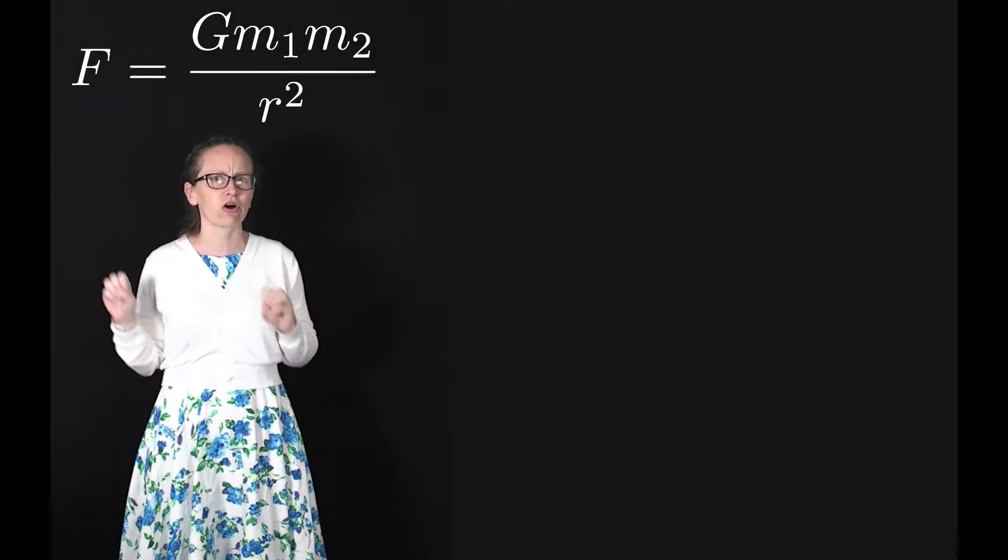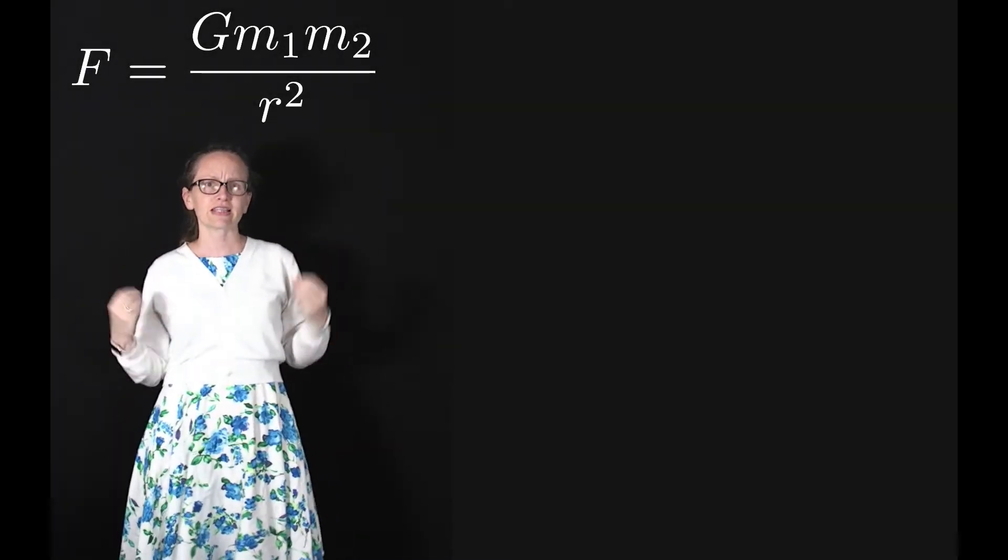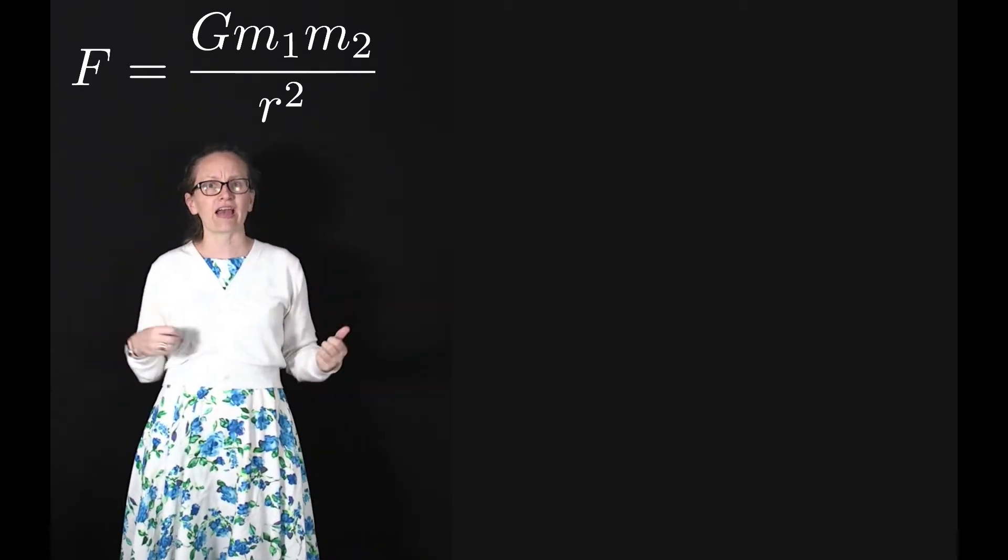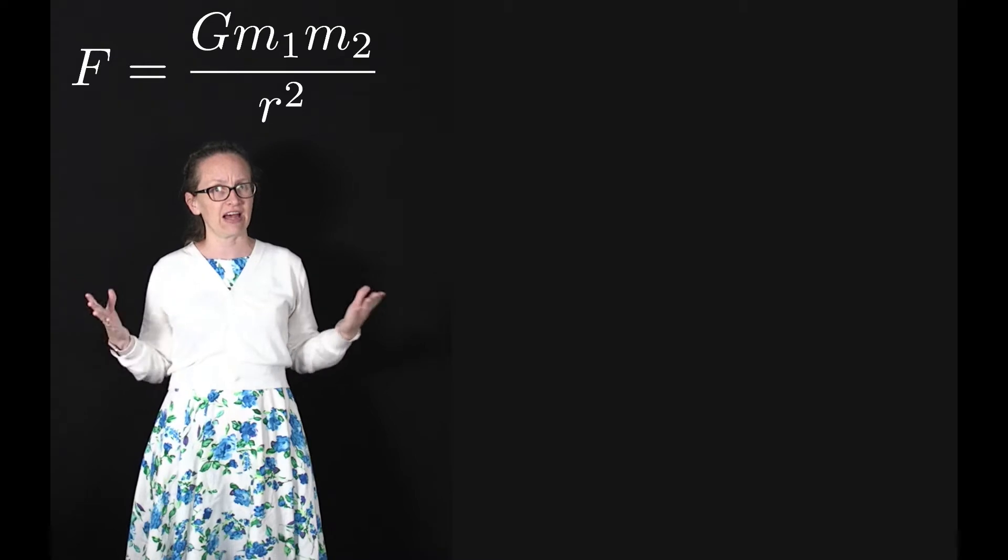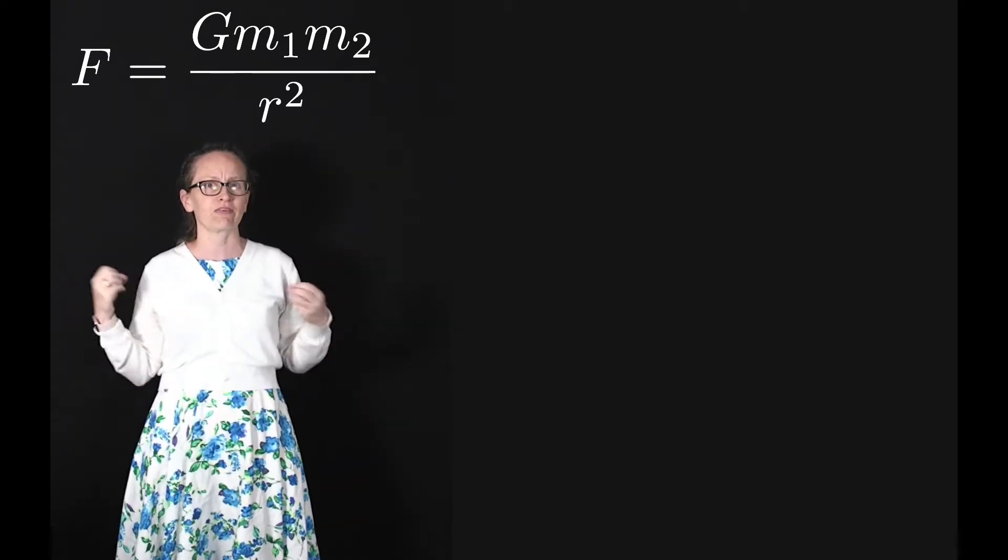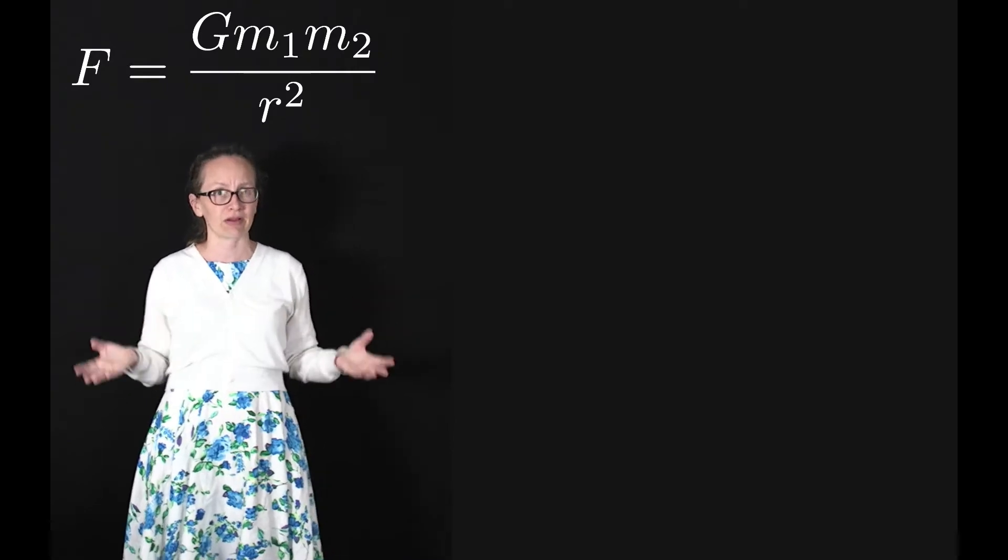Now that you've seen Newton's law of universal gravitation, let's have a think about how Newton actually came up with this law. Newton came up with it while he was self-isolating due to the Great Plague of London. This is something that we've all had some recent experience of.